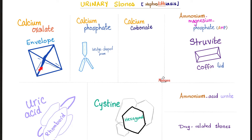Calcium oxalate stones are shaped like an envelope. Calcium phosphate look like wedge-shaped prisms. Struvite stones look like a coffin or coffin lid — these are evil infection stones; the patient's urine smells like ammonia. Uric acid stones are rhomboid crystals. Cystine stones are hexagonal in shape. The size of the stone varies — it could be as tiny as a grain of sand or up to one inch or two and a half centimeters large.